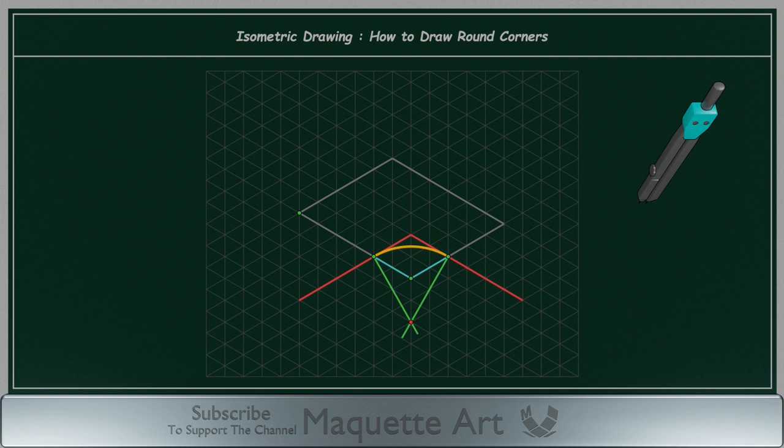Now let's draw the other inverted corner. Measure 2 cm on both axis. Draw two lines to form the square. Extend the lines. Draw the perpendicular lines. Now draw the arc.